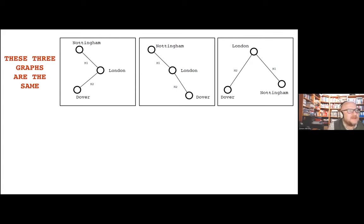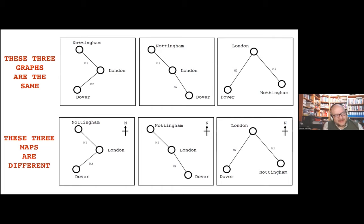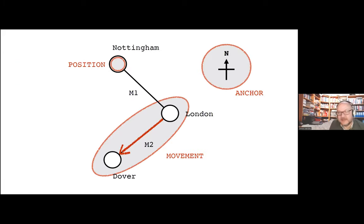All of these maps had one thing in common — they were not maps, they were graphs. To explain the difference: three graphs showing Nottingham, London, and Dover connected by two roads are all identical regardless of how you draw them. But three actual maps are completely different. The difference between a map and a graph is that in a map, space has meaning — which is why they're good at looking at landscapes, whether political, cultural, economic, or physical. Unfortunately everything called a map — business process maps, customer journey maps — they're all graphs. To be a map you need three basic characteristics: an anchor, position of components, and consistency of movement.